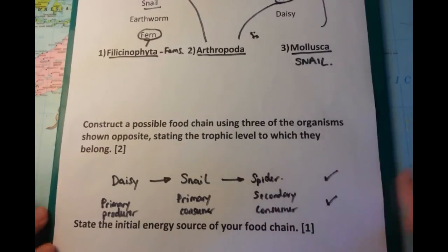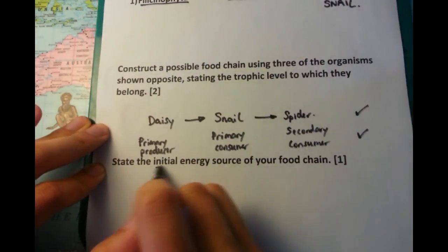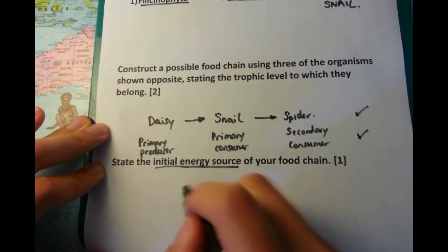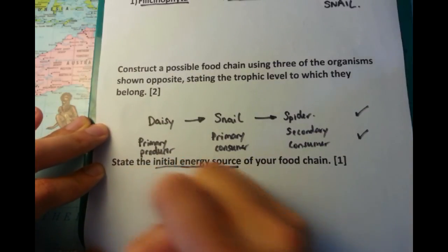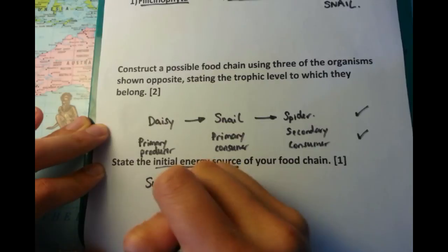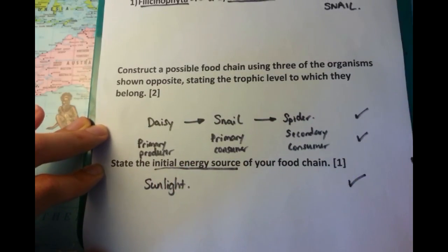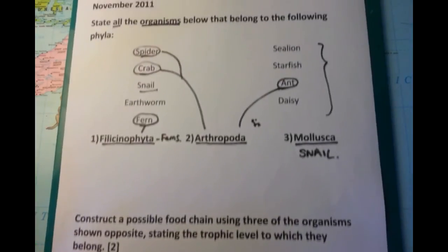The final part is to state the initial energy source of your food chain. It's kind of a trick question, because some people are tempted to say 'daisy' — in my example — or the initial producer. But the thing is, where does the energy come from for the daisy? It's from sunlight. And that's the correct answer: sunlight.